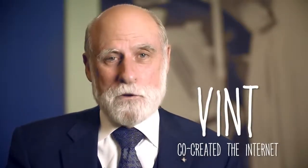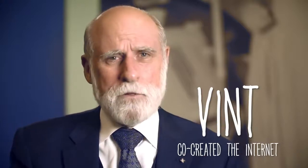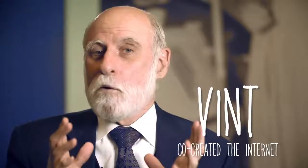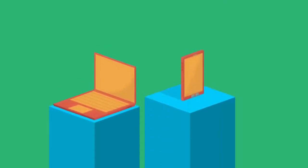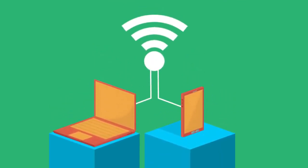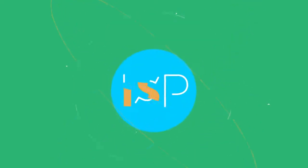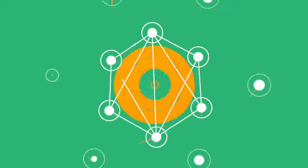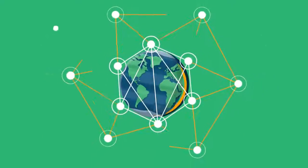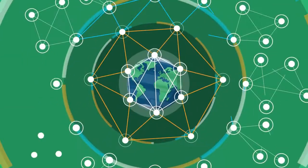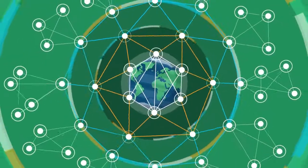The internet is a network of networks. It links billions of devices together all around the globe. So maybe you're connected with a laptop or a phone through Wi-Fi. But then that Wi-Fi connection connects to an internet service provider, or ISP, and that ISP connects you to billions and billions of devices around the world through hundreds of thousands of networks that are all interconnected.